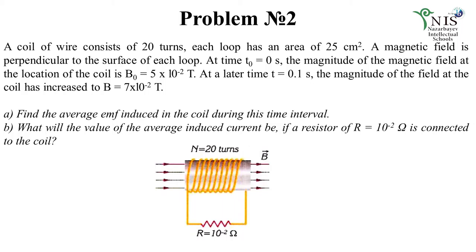Let's solve a problem. Given: a coil of wire consists of 20 turns, each loop has an area of 25 cm². A magnetic field is perpendicular to the surface of each loop. At time t₁ = 0 seconds, the magnetic field at the coil is 5 × 10⁻² Tesla. At a later time t₂ = 0.1 seconds, the magnetic field has increased to 7 × 10⁻² Tesla. Find: (a) the average EMF induced in the coil, and (b) the average induced current if a resistor of 10⁻² Ohm is connected to the coil.